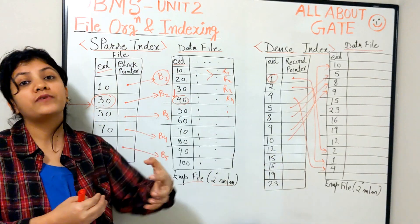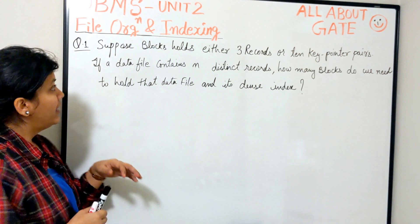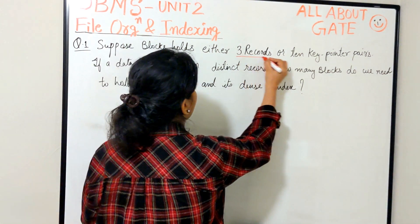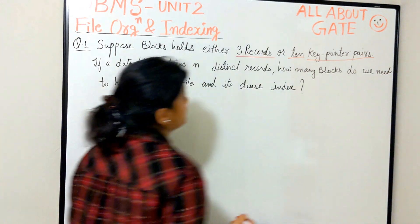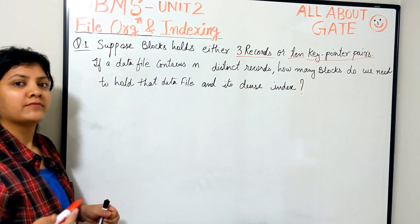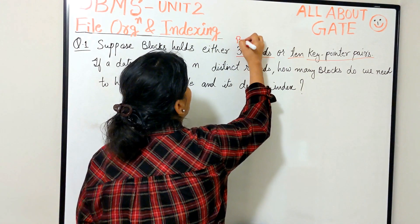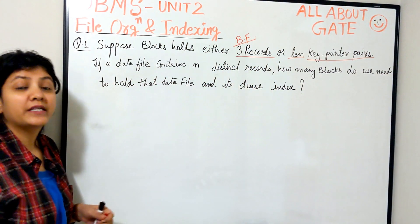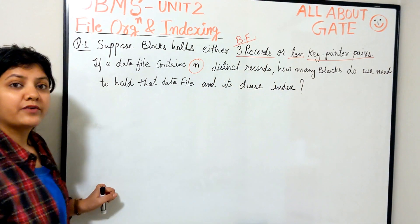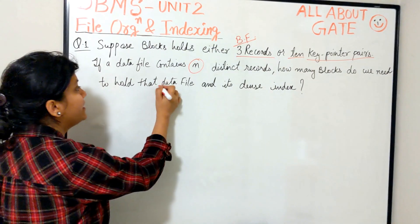Let me quickly go through one question that will summarize the concepts of sparse and dense as well as blocking factor. Here is a good question covering multiple factors. Read carefully: suppose a block holds either three records or ten key-pointer pairs. This line is telling us the capacity of the block — in other words, the blocking factor. Further: if a data file contains N distinct records, how many blocks do we need to hold that data file and its dense index?